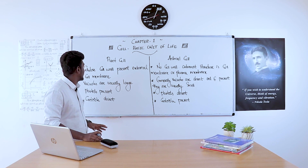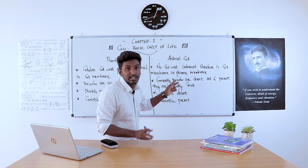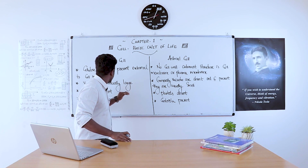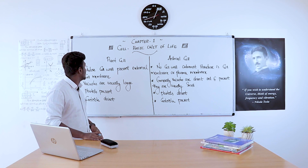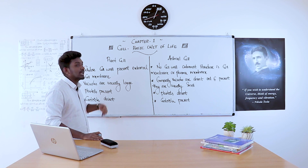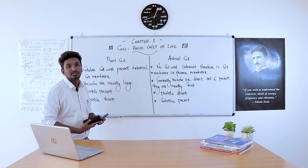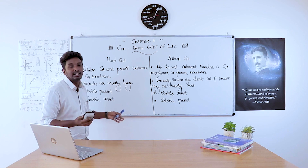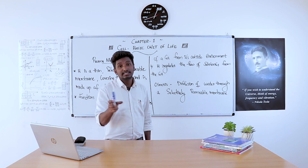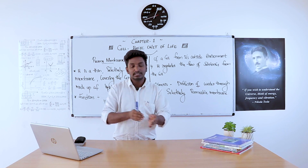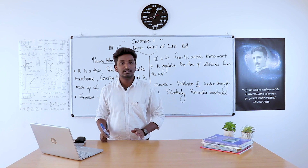For plant cells, vacuoles are large; for animal cells, they are absent or small. Plastids are present in plant cells and absent in animal cells. Centrioles are absent in plant cells and present in animal cells. That covers the difference between a plant cell and an animal cell, as well as what eukaryotic and prokaryotic cells are.